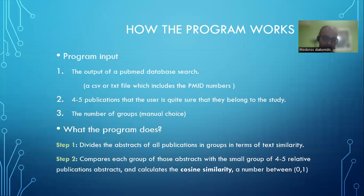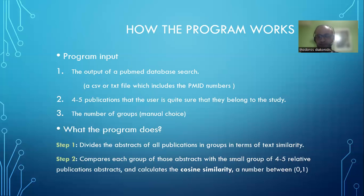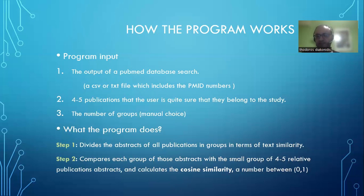The program divides the abstracts of all publications into groups defined by the user, based on text similarity. The measure for this text similarity is cosine similarity, which is a number between zero and one. If the number is close to one, it means the two texts are nearly identical. If it is zero, it means there is no connection between the texts. So you end up with a cosine similarity score between zero and one for each group.